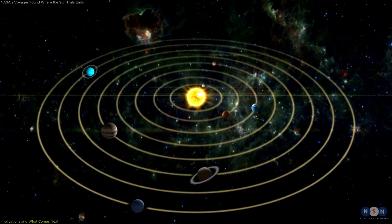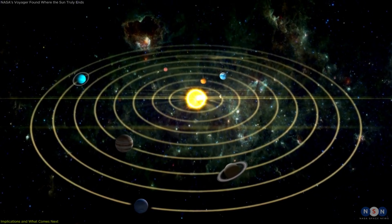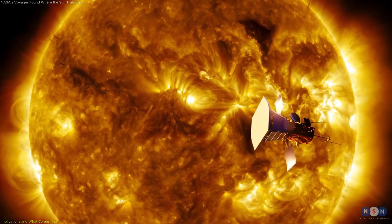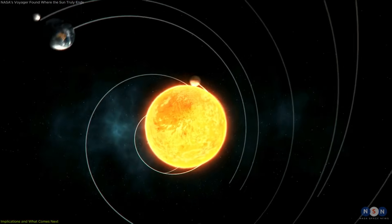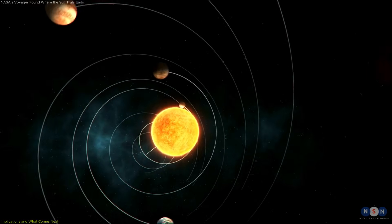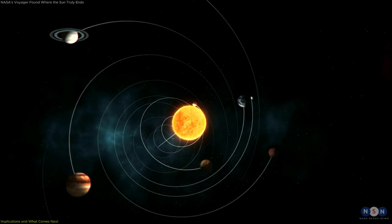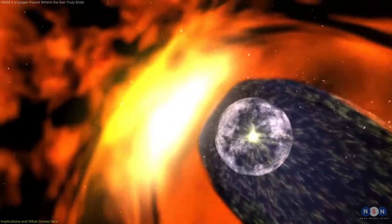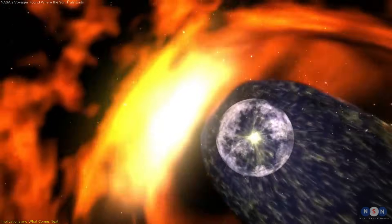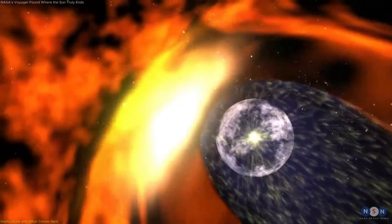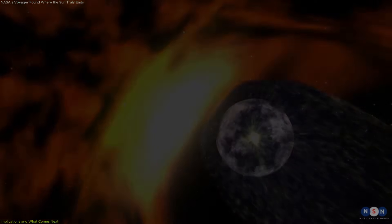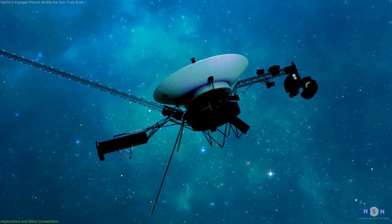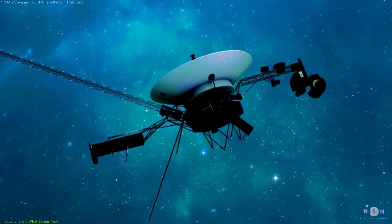There are also implications for the long-term history of the solar system. The Sun does not remain in one place within the Milky Way. Over millions of years, it moves through regions of varying density and magnetic activity. If the Sun were to pass through a denser interstellar cloud, the heliosphere could shrink, allowing more cosmic radiation to reach the inner planets.